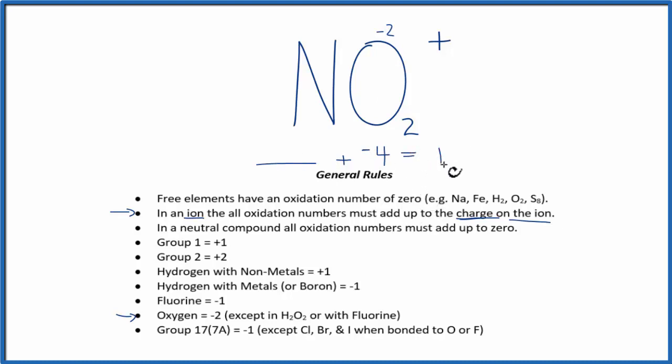So the only way we're going to get a positive 1 is if we have a positive 5 here, which is the oxidation number on the nitrogen. 5 minus 4, that gives us 1. So the oxidation number on the nitrogen in NO2 plus is a positive 5.